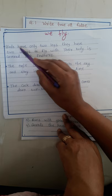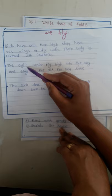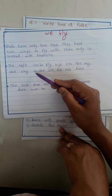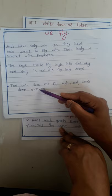Birds have only two legs. They have two wings to fly with and their body is covered with feathers. The eagle can fly high into the sky and stay in the air for a long time. The cock does not fly high and comes down soon.